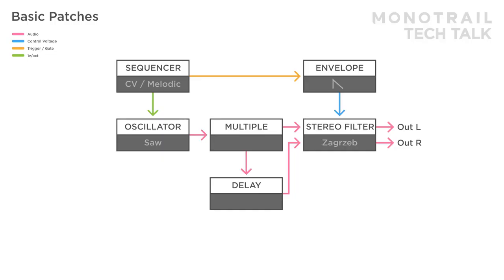Using a delay or other stereo effect like this before the filter has a very different result than using it after the filter. In this setup, the delay isn't creating audible delays, but instead working like a wave shaper for the saw wave oscillator. You can push the delay into the extreme because the filter is still shaping and controlling the sound.